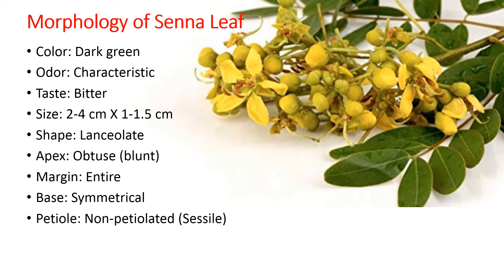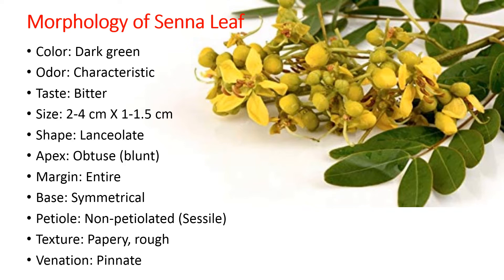The leaves do not have a prominent petiole. Instead, the leaf is sessile — the blade or lamina is directly attached to the rachis. The rachis is the central brown-colored twig to which the entire leaf is directly attached. After drying, the leaf appears to be rough and papery in texture and has a pinnate type of venation.